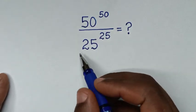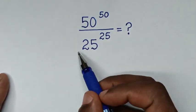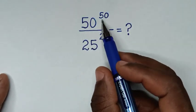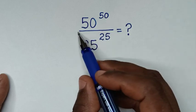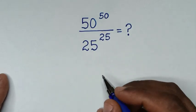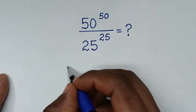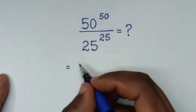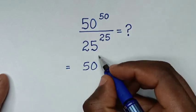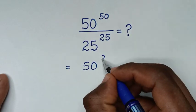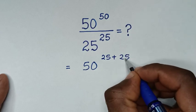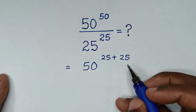Hello, you are welcome to solve this math problem, which is 50 to the power 50 over 25 to the power 25. It will be equal to 50 to the power of 50, which is the same as the power of 25 plus 25, so as to have the same power.